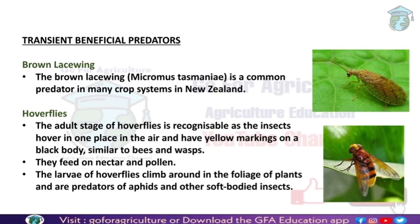Transient predators only visit the field when there are pests to eat. An example is the brown lacewing, which is the most common predator in many crops in New Zealand. For wheat crops, brown lacewing is used as a biological control agent.